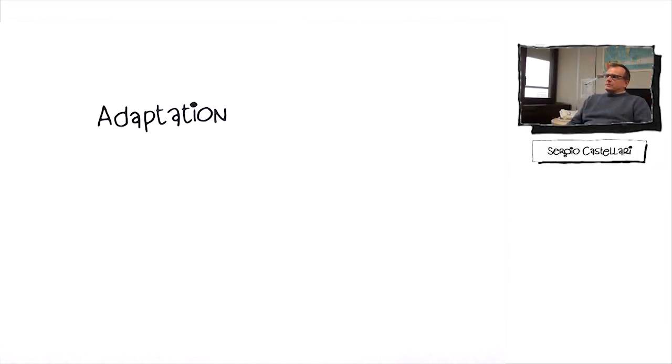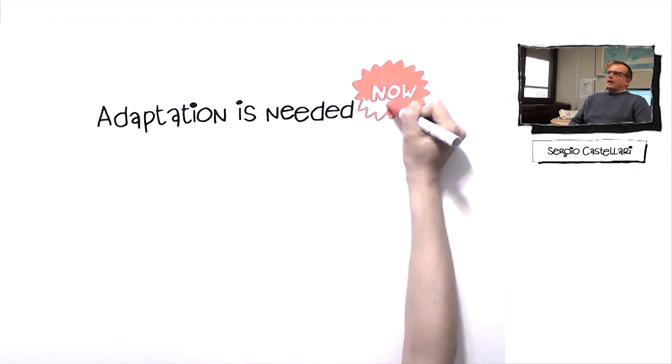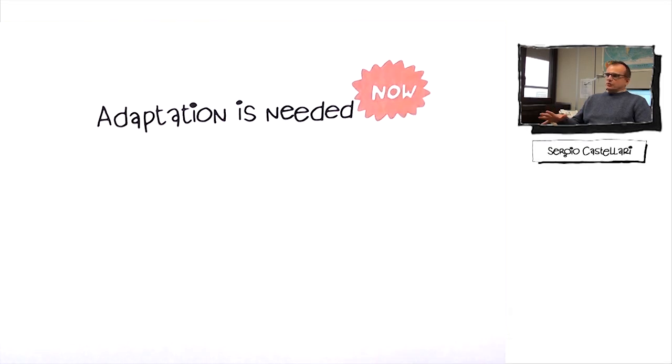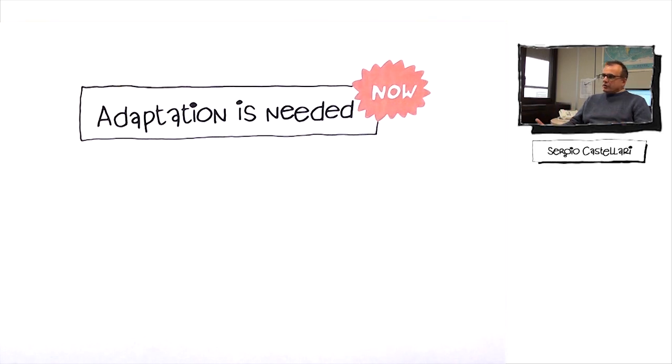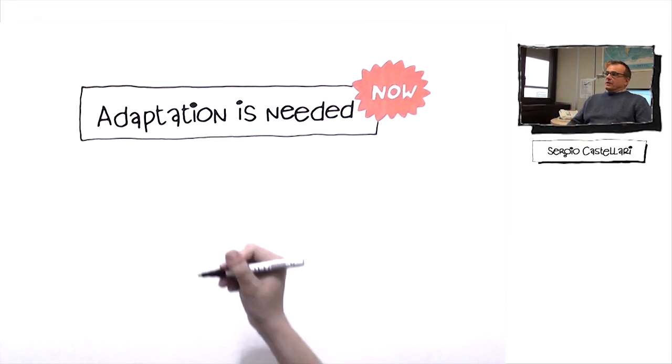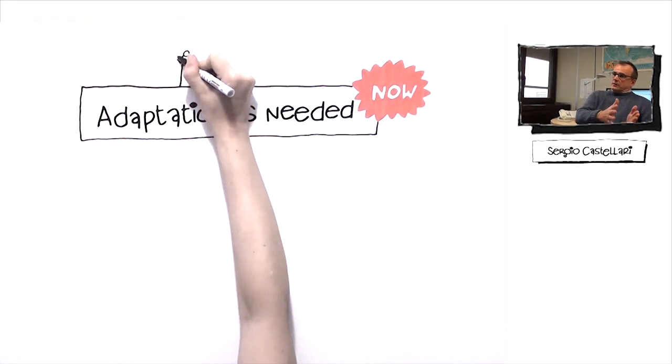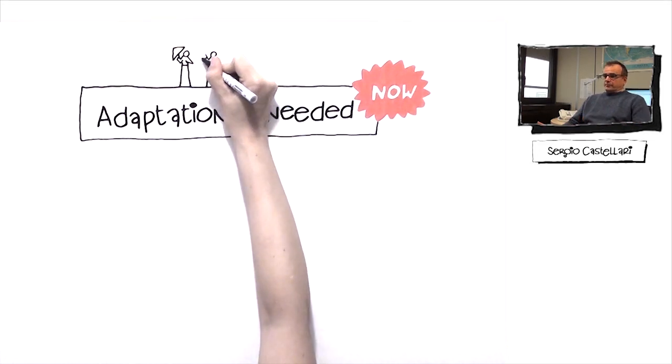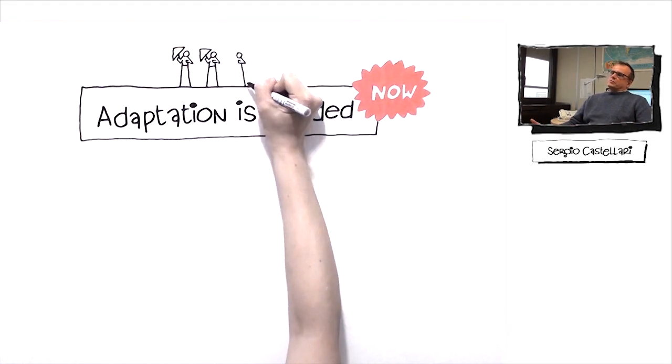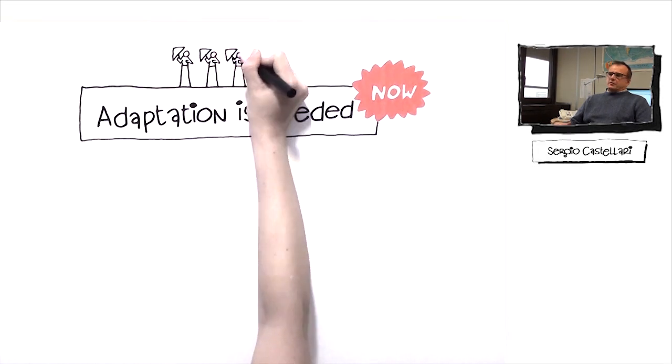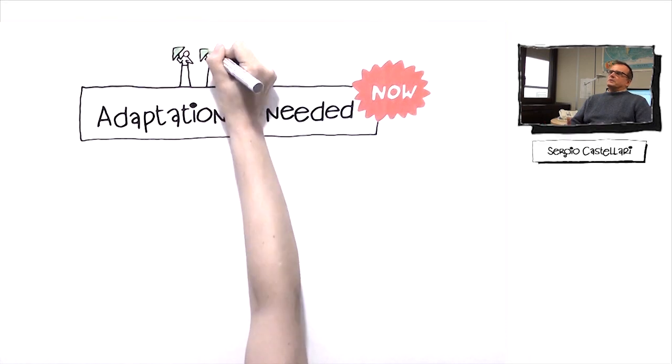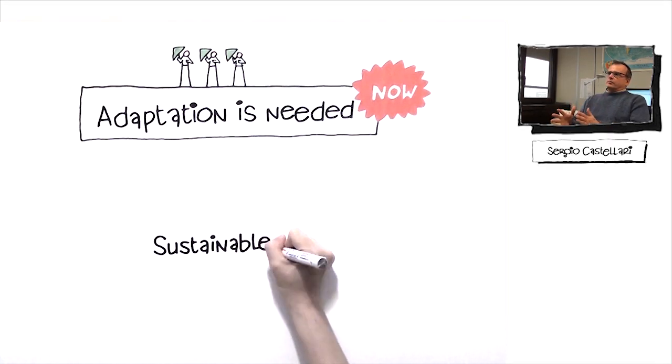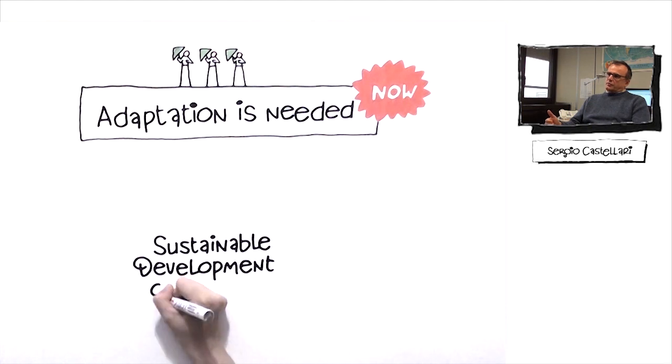I think the main message of this report is adaptation is needed now. Despite any global policy on mitigation or reduction of greenhouse gas emissions, we need to adapt because impacts are going on and they will increase in some areas. They will hit industrialized countries and developing countries, and so we need to increase the resilience of these countries in the different sectors to the future impacts of climate change. Adaptation should be seen as a part of our effort to go to a sustainable development of our society.